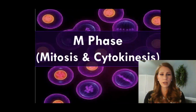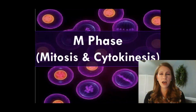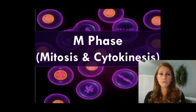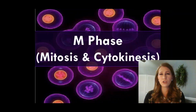Today we're going to talk about M-phase, which can be broken down into mitosis and cytokinesis. These are the final parts of the cell cycle. We started with interphase, which consisted of G1, S, and G2 phases, and then we did the actual dividing part — that's what we're getting to today, which is M-phase.